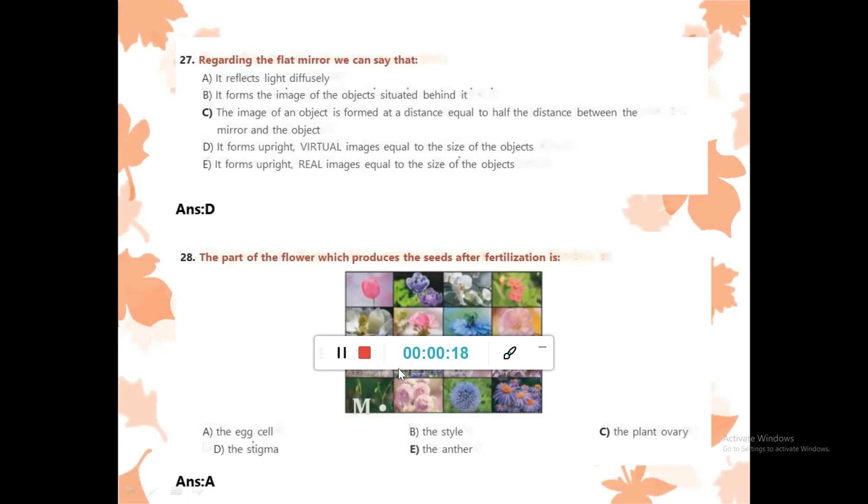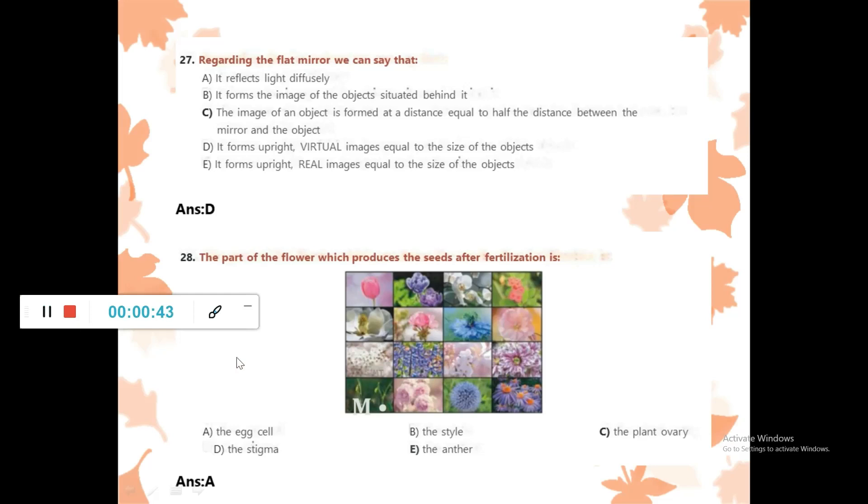Question 28: The part of the flower which produces the seeds after fertilization. The egg cell, not the stigma, not the style. In the plant ovary, in the ovary there is the ovule. The ovule meets the male gamete and seeds are produced in the ovule. A is correct.